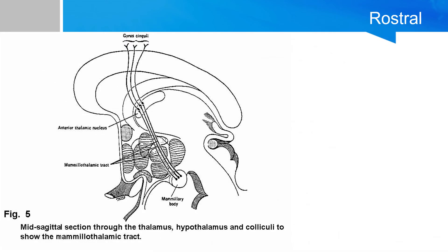Rostrally, the mammillothalamic tract is a unidirectional output from the mammillary body to the anterior nucleus of the thalamus, which in turn projects to the cingulate gyrus. The reticulohypothalamic tract carries information from the retina to the suprachiasmatic nucleus, and this information eventually travels via the dorsal longitudinal fasciculus to the lateral horn of the spinal cord for sympathetic innervation.